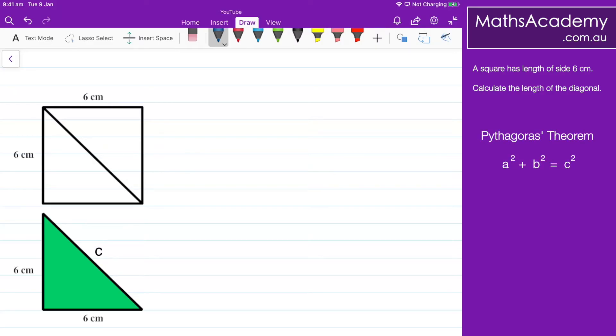So what we have is that a squared plus b squared equals c squared. That's our normal formula for Pythagoras. In this case we have 6 squared plus 6 squared is equal to c squared.